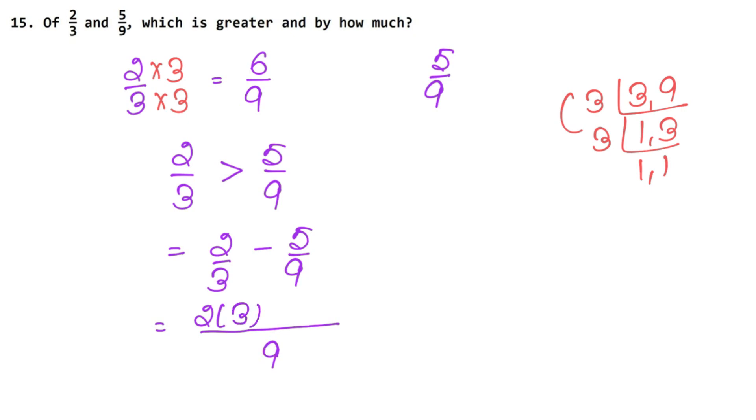3 times 3 is 9, so 2 times 3 is 6. Minus 5 as it is, 9 times 1 is 9. Bracket open, 2 times 3 is 6 and 5 times 1 is 5 upon 9. And 6 minus 5 is 1 upon 9. So this means 2 upon 3 is 1 upon 9 times greater than 5 upon 9. Answer.